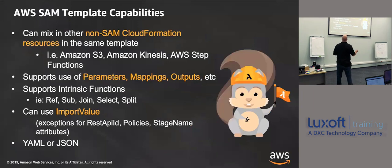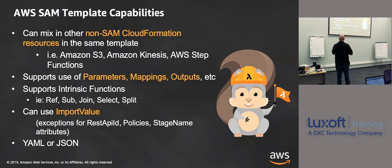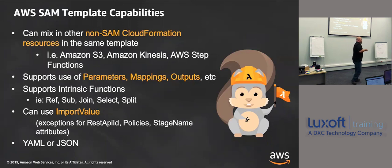AWS SAM is based on CloudFormation. If you've never used CloudFormation, it's the templates that allow you to build out your infrastructure. SAM can mix in non-SAM CloudFormation resources in the same template. It supports use of parameters, mappings, and output. In SAM I can take the same template and pass parameters in as I'm building. So I can use the SAM template to build a dev environment, pass in a parameter like 'dev', maybe pass in a security string.